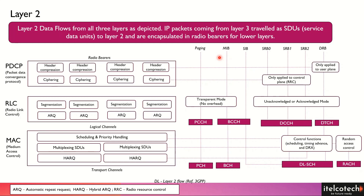When information comes from the upper layer, it first goes through the PDCP in terms of radio bearers. Header compression happens here so that information coming down is compressed to reduce resource occupancy. This is done by PDCP along with ciphering. Certain information related to the control plane — the RRC — needs to be secured.